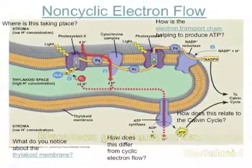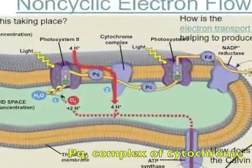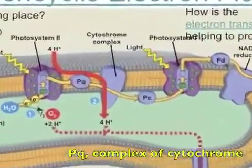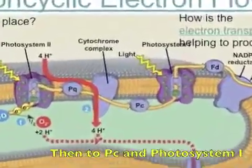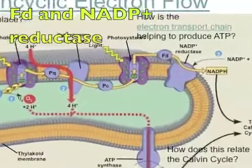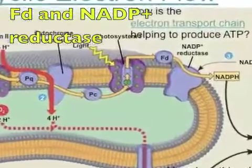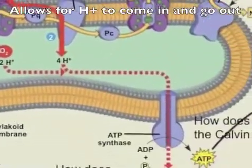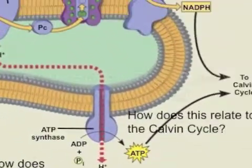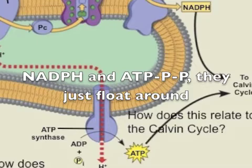Electrons are transported via the PQ complex, cytochrome, then to PC, and onto photosystem 1. Ferredoxin and NADP+ reductase facilitate the process. A lot of H+ ions come in and go out through ATP synthase, producing NADPH and ATP, which just float around for use in the Calvin cycle.